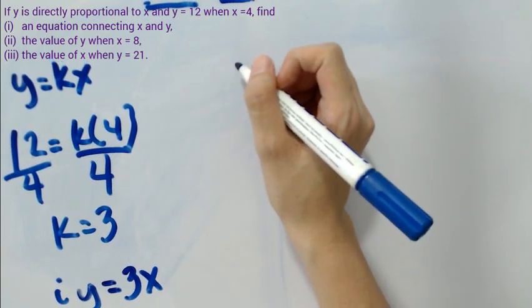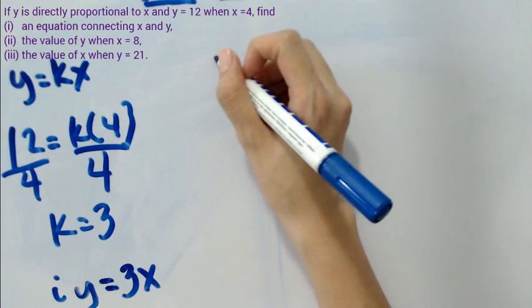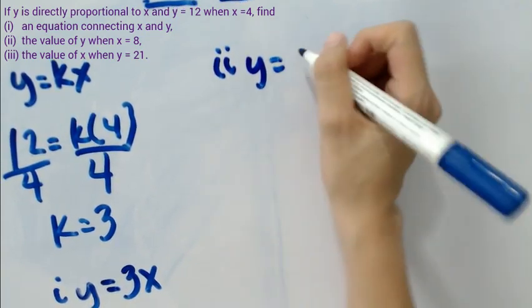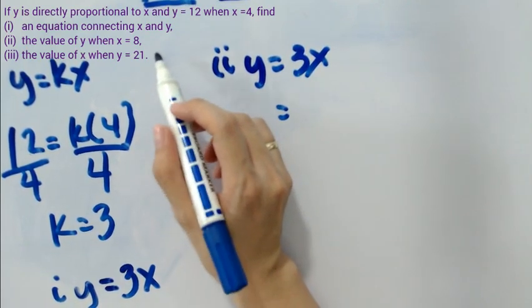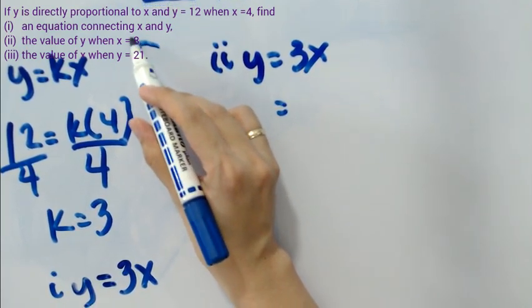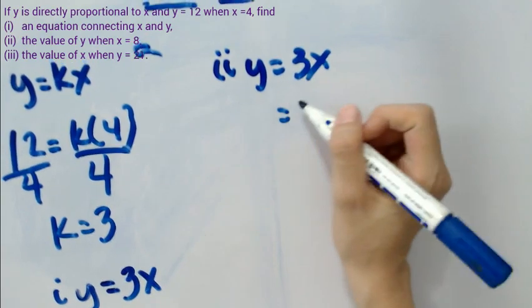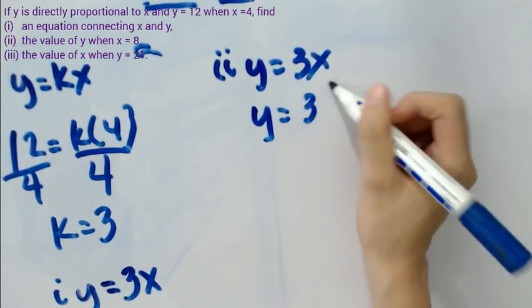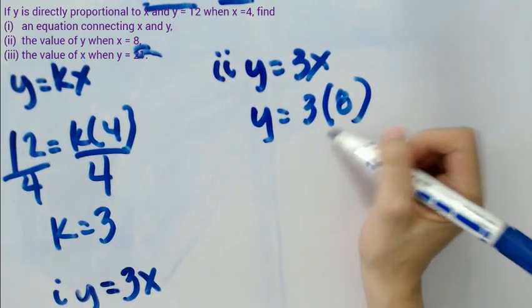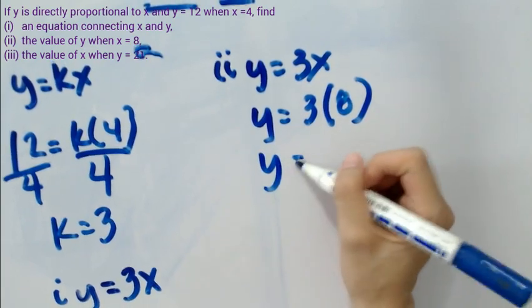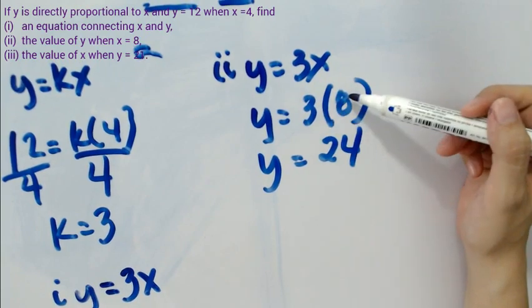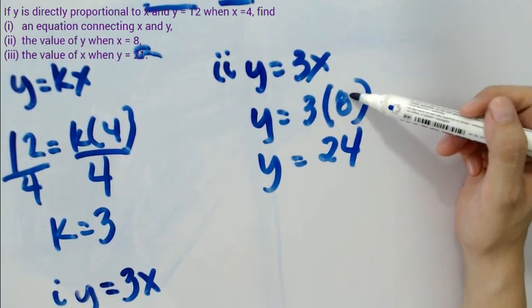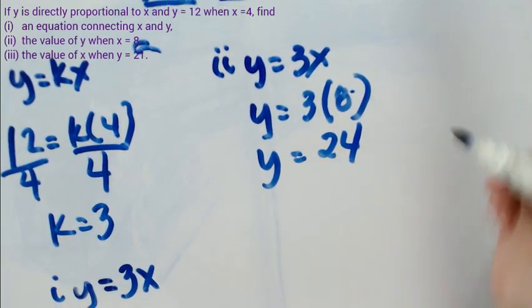We substitute x equals 8. So we have y equals 3x, making x equal to 8 as stated in the problem. So y equals 3 times 8, and 3 times 8 is 24. Therefore, when x equals 8, y equals 24.